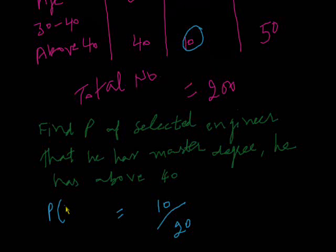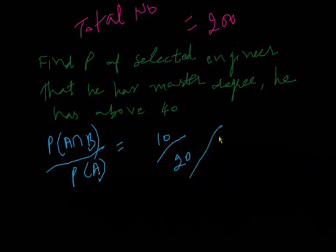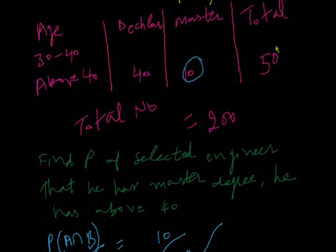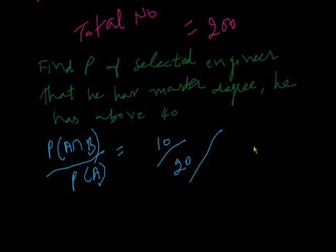Probability A and B. The probability of A we will calculate divided by all the number of students who are above 40, which is 50. So 50 divided by 200.